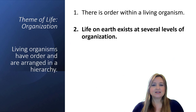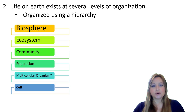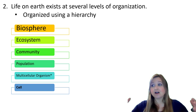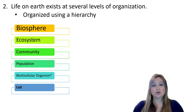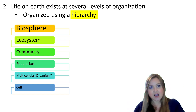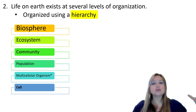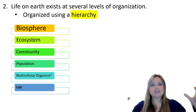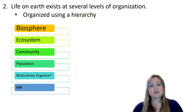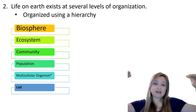The second part of this characteristic is that life on Earth exists at several levels of organization. To order all life on Earth and the non-living things we interact with, we use a hierarchy — simply an organization method that allows you to drill down to very specific levels, or zoom out to see the whole picture at the most inclusive levels. Each new level builds on the level below it.